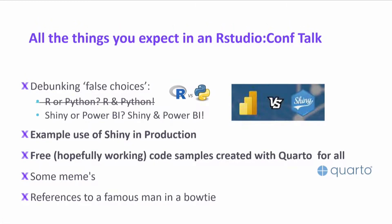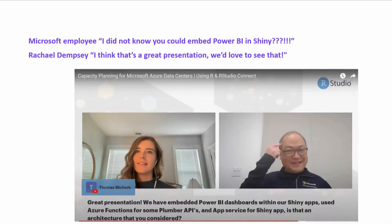What can you expect during this talk? Some insights on why it's not always Power BI or Shiny, but sometimes Power BI and Shiny. A bit more about the use of R Shiny in production, some examples, code samples, and of course some references to a famous man in a bow tie.